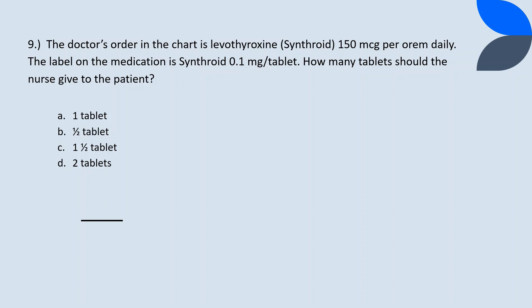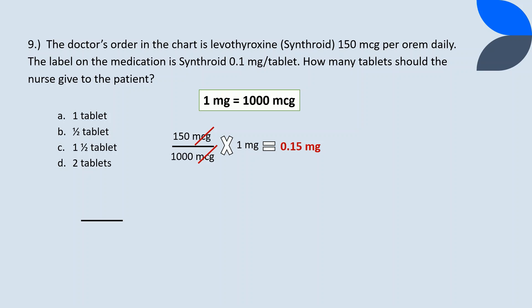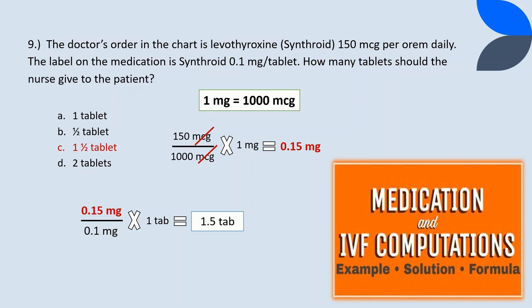Question 9. The doctor's order in the chart is levothyroxine 150 micrograms PO daily. The label on the medication is Synthroid 0.1 milligram per tablet. How many tablets should the nurse give to the patient? First, convert 150 micrograms to milligrams by dividing it by 1000, which will be equal to 0.15 milligrams. Then proceed to the formula: the doctor's order divided by the stock dose, multiplied by the number of tablets, which will be equal to 1.5 tablets. Therefore, the correct answer is C. To know more examples about IV drug computations and flow rates, check my simple explanation in this video. The link will also be available in the description below.